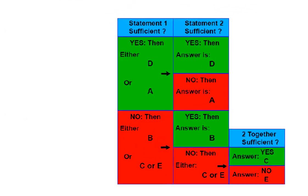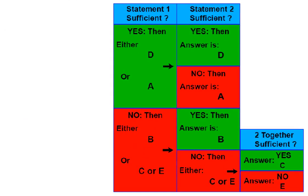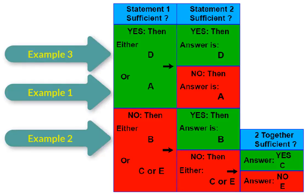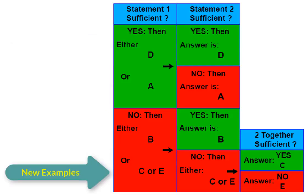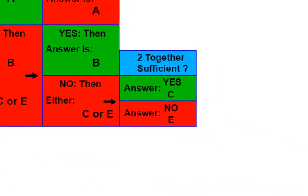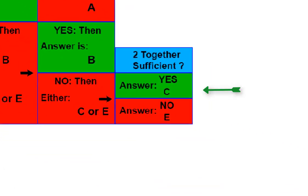In these three examples, we've seen combinations of statements one and two resulting in answers A, B, and D. Now let's look at two more combinations that will result in answers C and E. These two answer types have in common that neither of their individual statements is by itself sufficient to solve the problem. However, for answer C the two statements together are sufficient, while for answer E the two statements together are not sufficient.